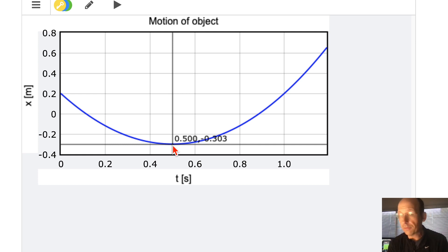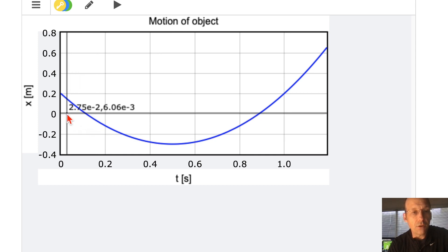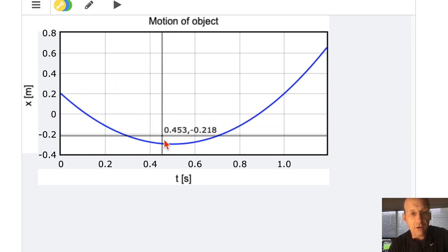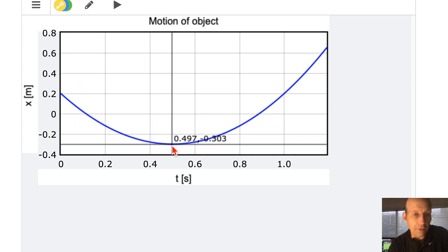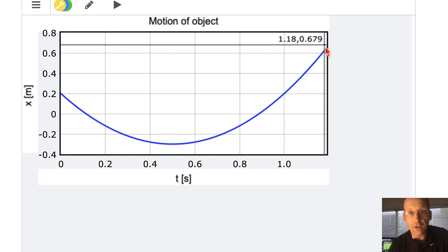It says, what's the maximum distance from the origin during this time interval? Well, from the origin. So that would be, here it is, that's the maximum distance below. But over here, it's even further. Okay. But let's do both those on paper.